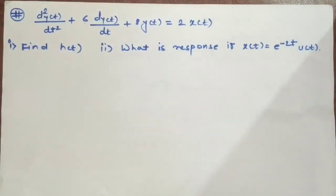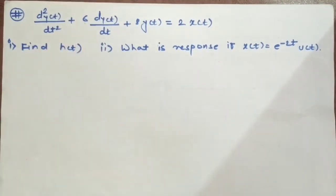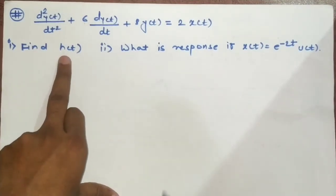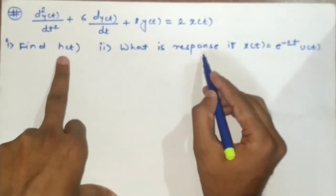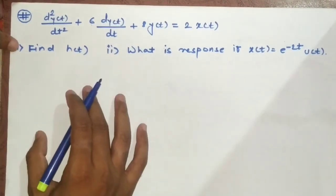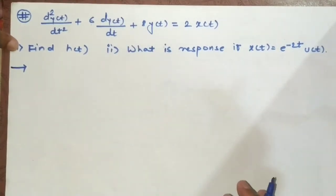In this segment we will see some miscellaneous examples on Fourier transform. A statement is given as an LTI system in a form of differential equation, and we have to find first its impulse response and then find the response of the system if the input is changed. Whenever we get such examples given in a form of differential equation, we first have to simplify them using the differentiation in time domain property.